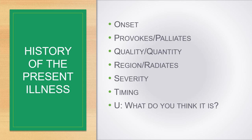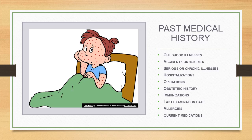As you're forming your differential diagnosis and thinking about what the patient is seeking health access for that day, start thinking about what other information you need to know so that you're sure you're treating them correctly. You're going to obtain the patient's past medical history, which includes things like illnesses they've had in the past, any significant accidents or injuries, any chronic illness they currently experience, any major hospitalizations and operations, their obstetric history, immunizations, their last exam date, allergies, and current medications.